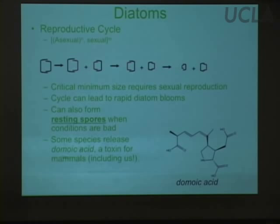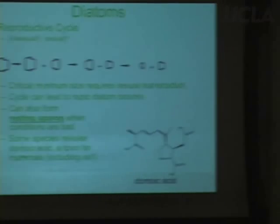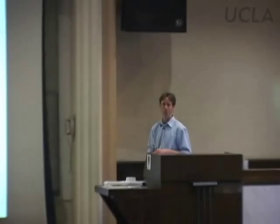Diatoms are also capable of dealing with times when photosynthesis is not favorable — they can form a resting state, a spore, that isn't really active photosynthetically but can survive without fixing any energy from sunlight for long periods of time. If the season is bad, you're near the poles in winter, or nutrients are running out, they can survive until conditions improve.